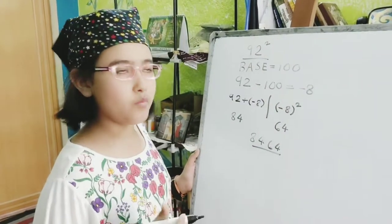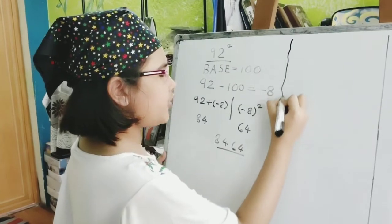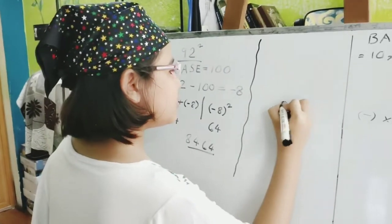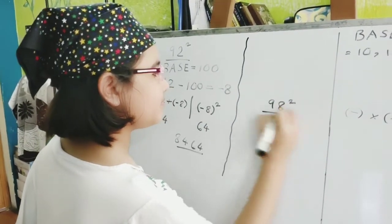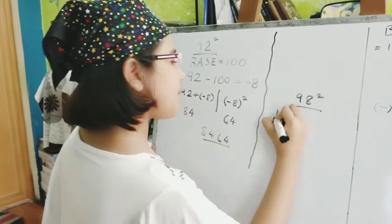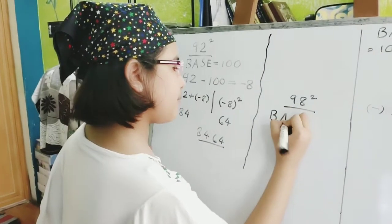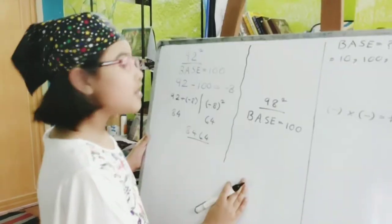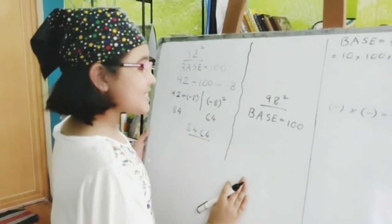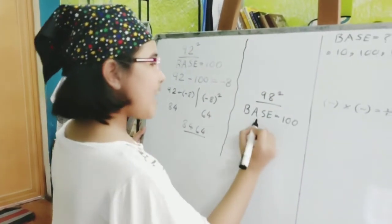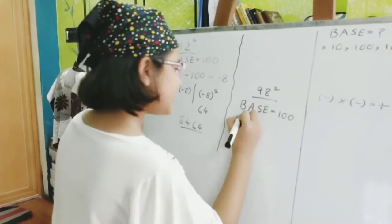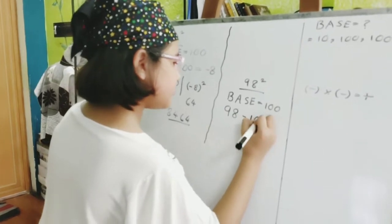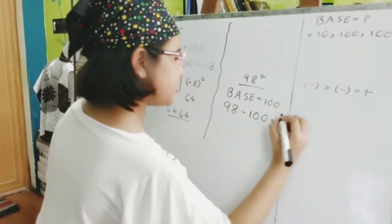Let's try one more number. So, what should we try? Ninety-eight. Ninety-eight. So, ninety-eight squared. So, as we write the base number, we'll write the base number as 100. So, the next step is to subtract the base number from the number. So, we can write 98 minus 100 is equal to minus 2.